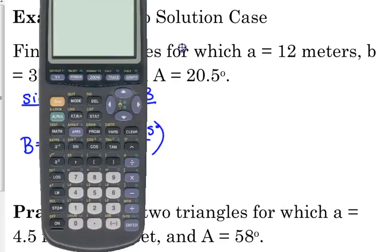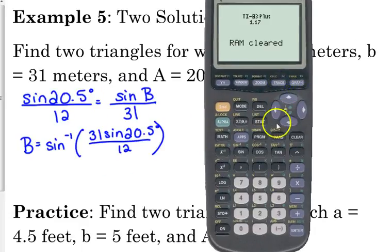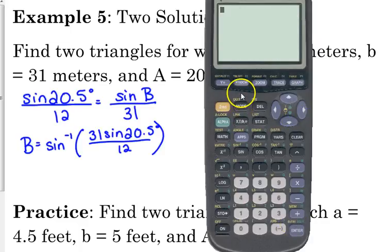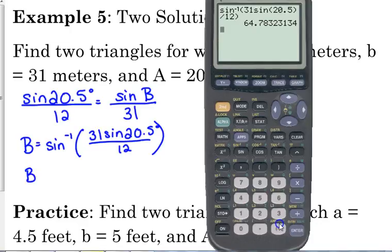Now, I know some of you are in the habit of resetting your calculators, so before you ever start these problems, you should always check and make sure that you're in degree mode. My calculator resets every time I close it on my computer, so I have to switch it. It's a good habit for you to be in to check that. All right, so the inverse sine of 31 sine of 20.5, close the parentheses over 12, close the big set of parentheses, gives us that angle B is approximately 64.783 degrees.